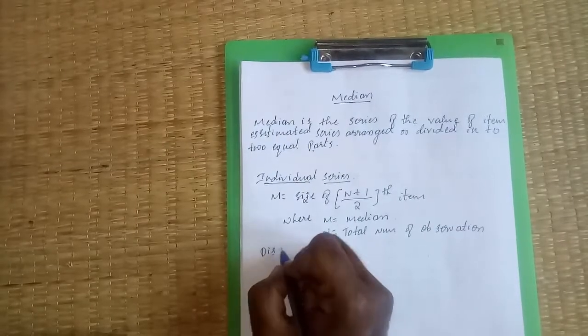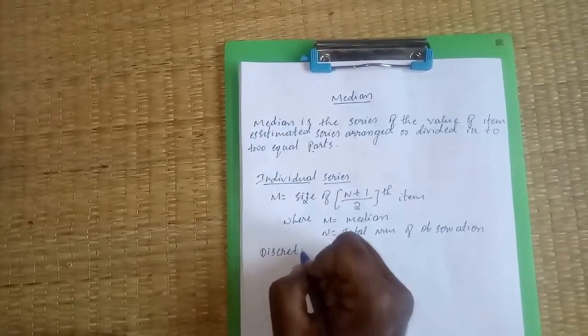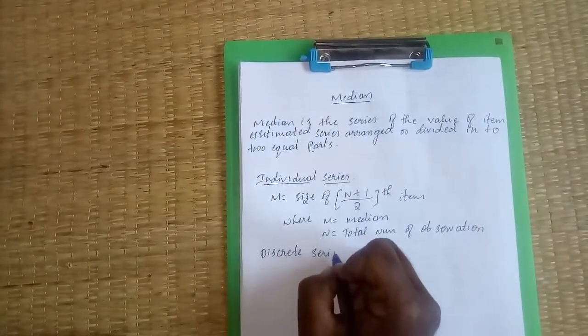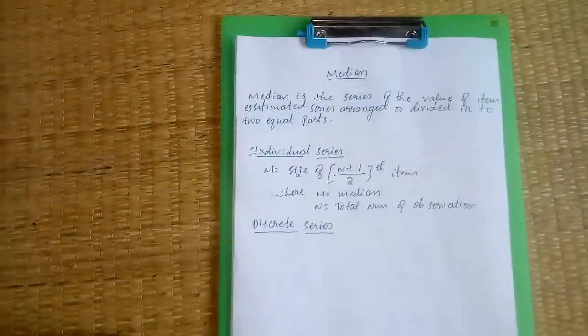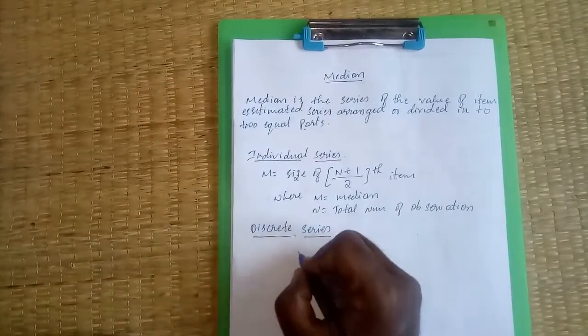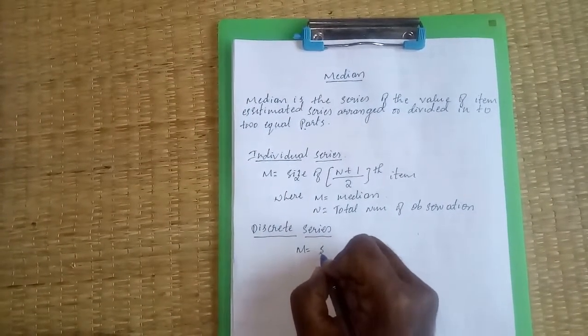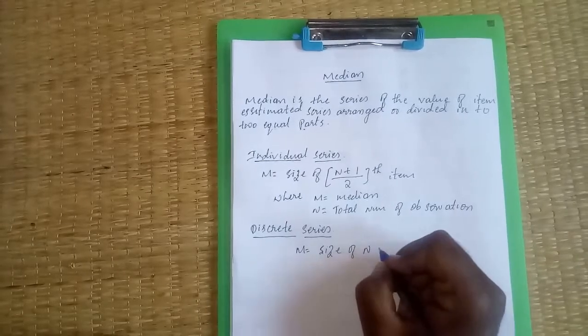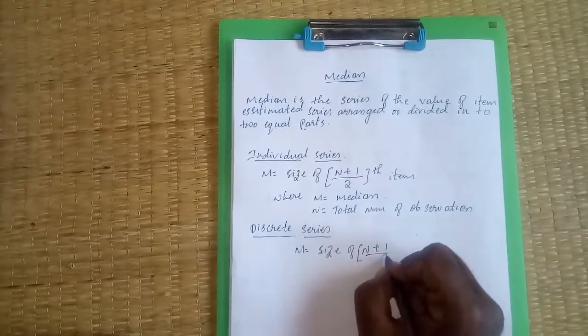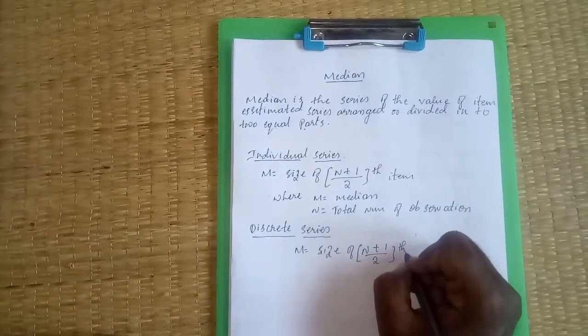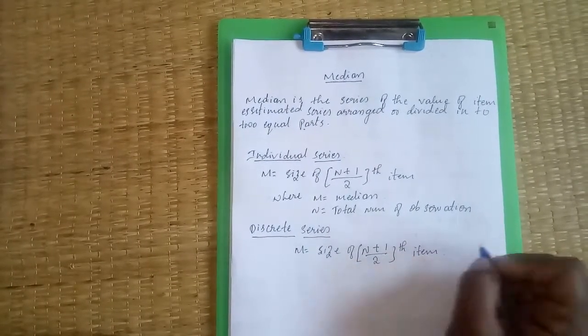So discrete series - for discrete series, the formula is M equals size of n plus 1 divided by 2 item. The formula is the same as individual series.